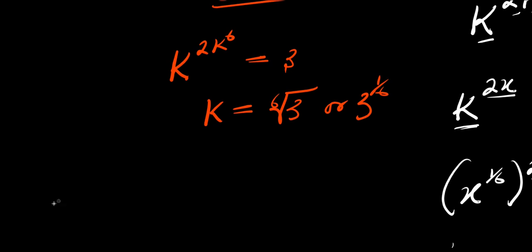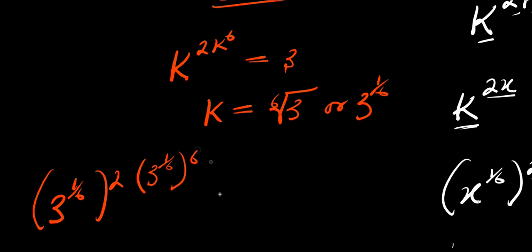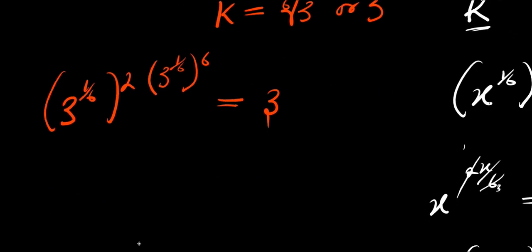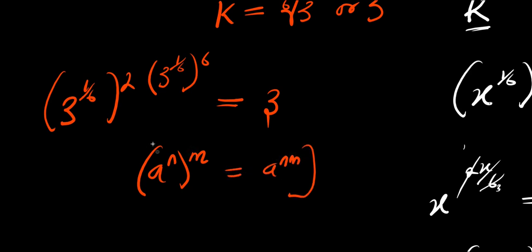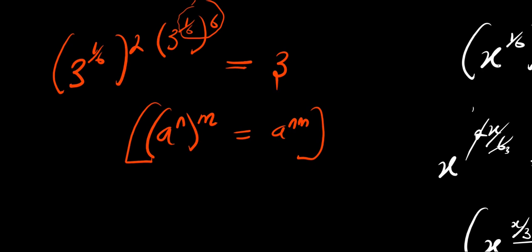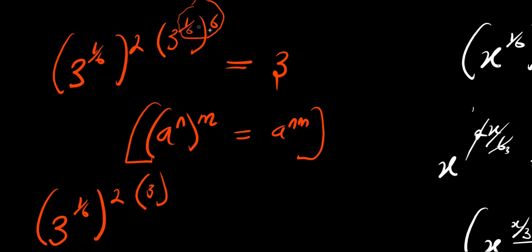So I substitute: 3 power 1 over 6, that is my k, raised to the power of 2, times k again — 3 power 1 over 6 — raised to the power of 6, and this equals 3. Using the identity a power n raised to the power of m equals a power n times m, I multiply the exponents. That is 6 times 1 over 6, which is 6 over 6, equals 1. That means I have 3 power 1 over 6, raised to the power of 2, times 3 — because 1 over 6 times 6 equals 1 — and this equals 3.